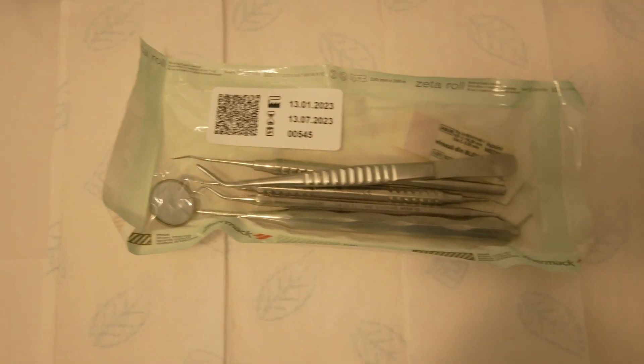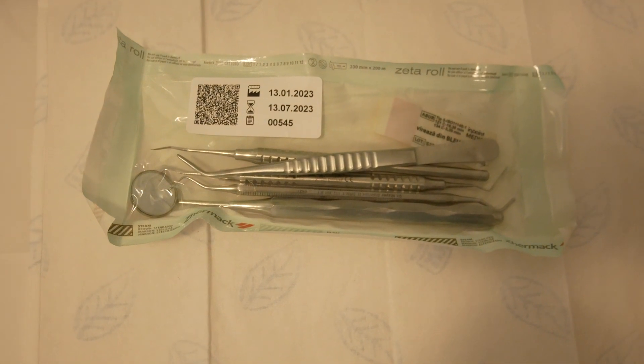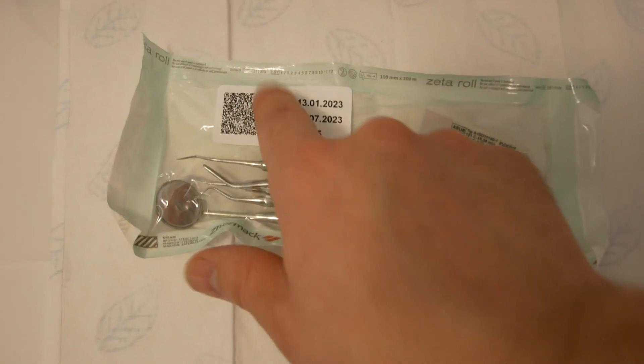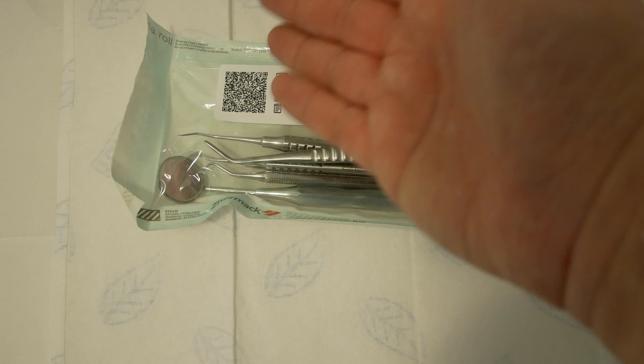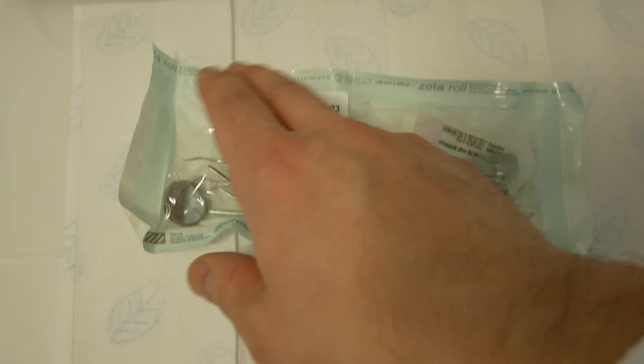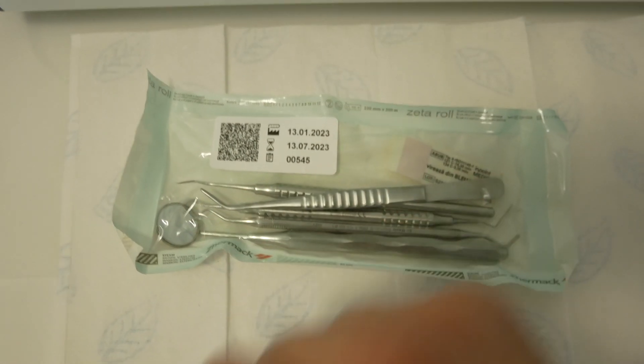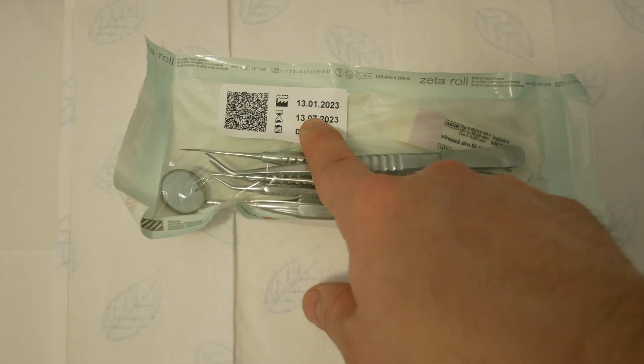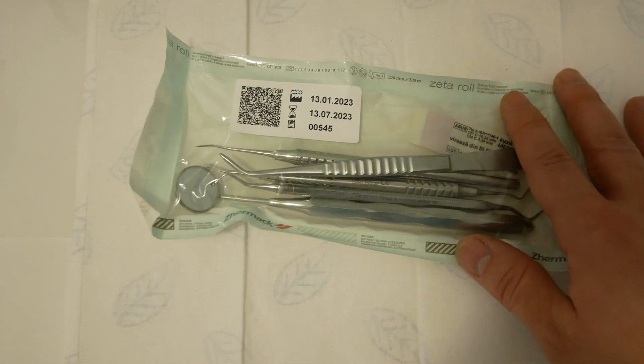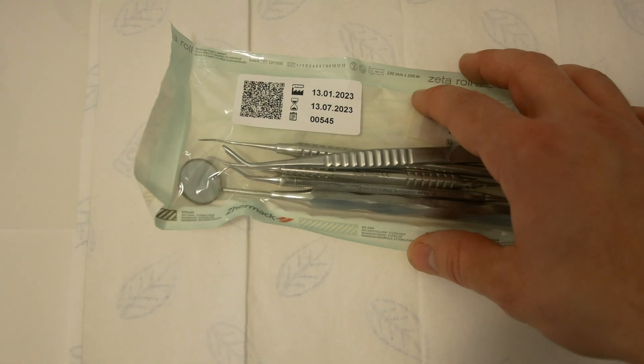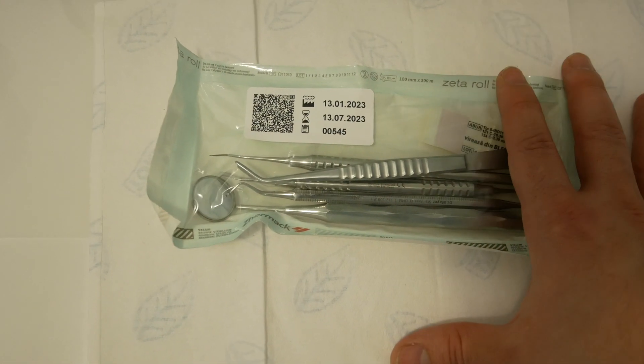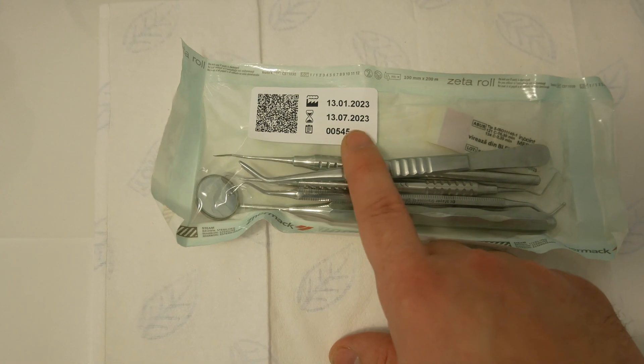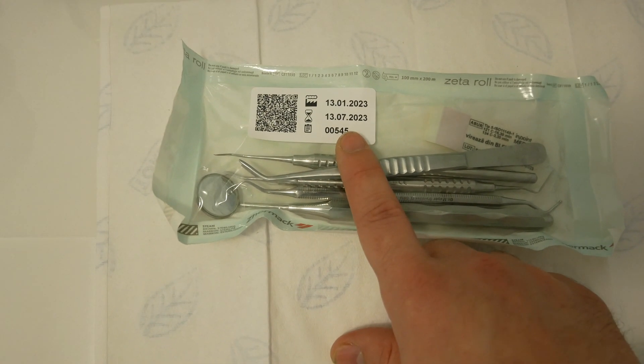I'm also labeling each bag with a QR code that contains all the information of the sterilization cycle, the sterilization date, the expiration date. The expiration date on this package for this manufacturer is six months and the number of the sterilization cycle.